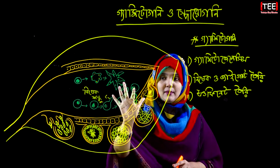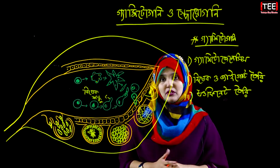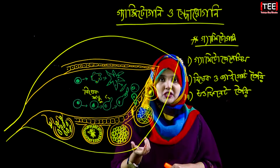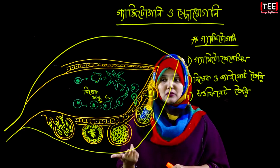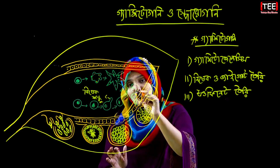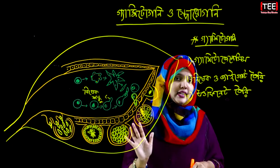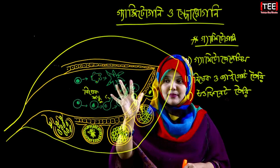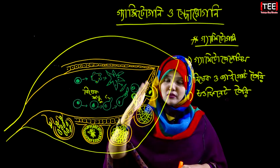The zygote is formed at this step. This step is completed — that is the end of gametogony. We have now discussed the gametogony stage.